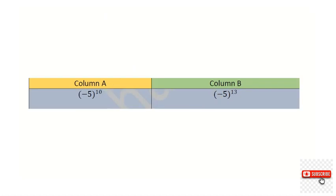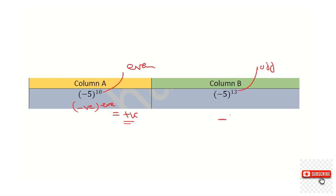Regarding the second question: the power on one side is even and on the other side is odd. If you have a negative number raised to an even power, the answer is positive. But negative raised to an odd power keeps the answer negative. So of course, the positive value is greater than the negative value.